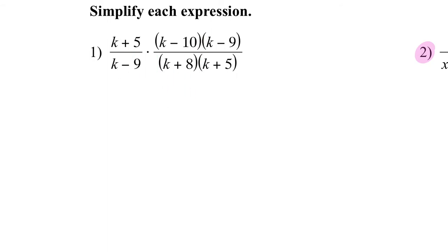Whatever we have that is the same — in this case, k minus 9 and k minus 9 — I can cancel it out. And then k plus 5 and k plus 5, I can also cancel it out. So at the end, I just have k minus 10 over k plus 8, and that's my multiplication of those two fractions.